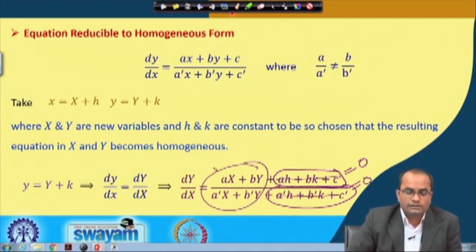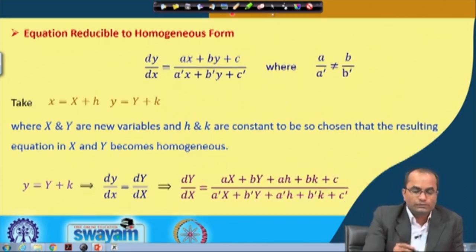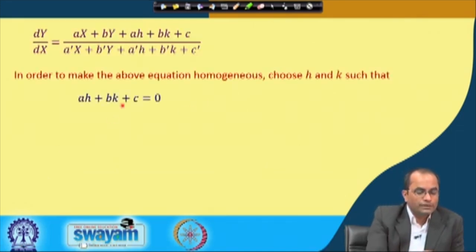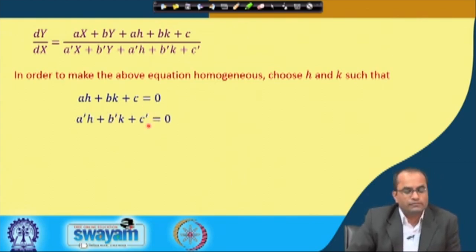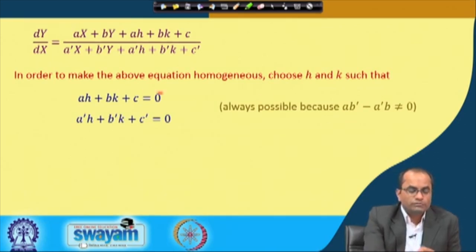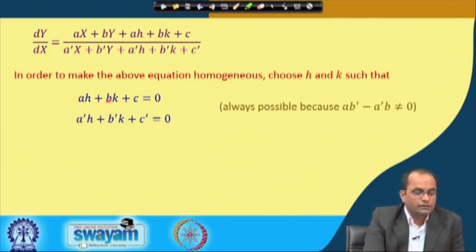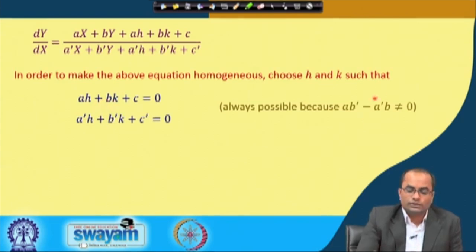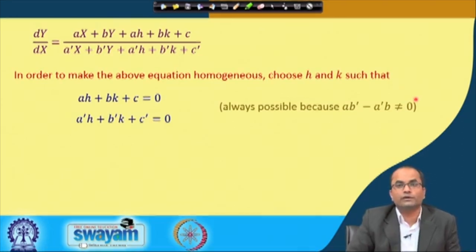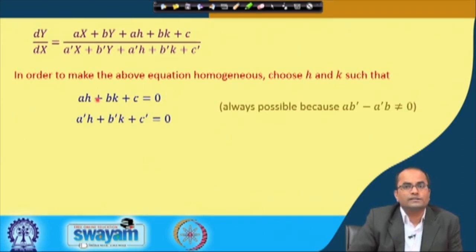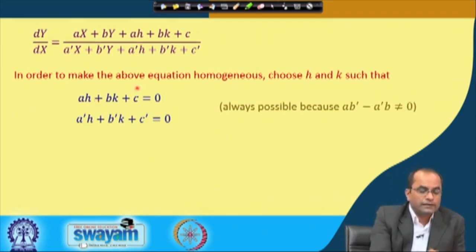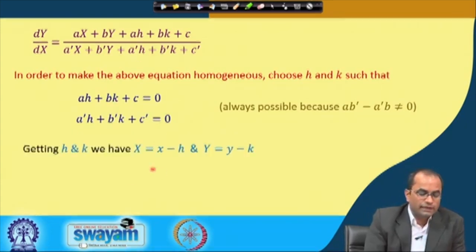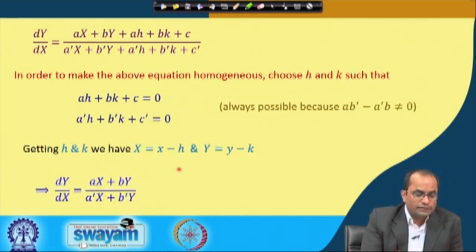Setting the constant terms to zero gives the linear system: ah + bk + c = 0 and a'h + b'k + c' = 0. This system is always solvable because its coefficient determinant — the determinant of [a, b; a', b'] — is non-zero, which is precisely the condition a/a' ≠ b/b' given earlier. So we can always find unique values of h and k that eliminate the constant terms.